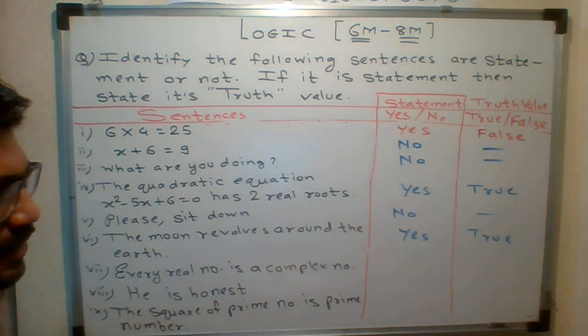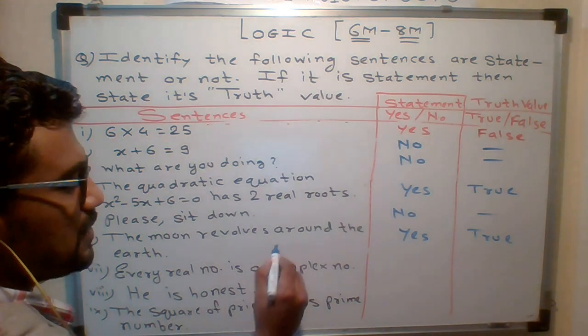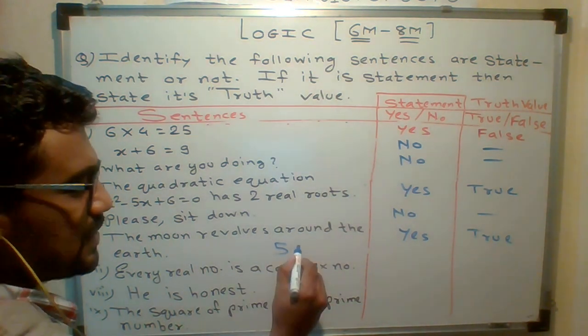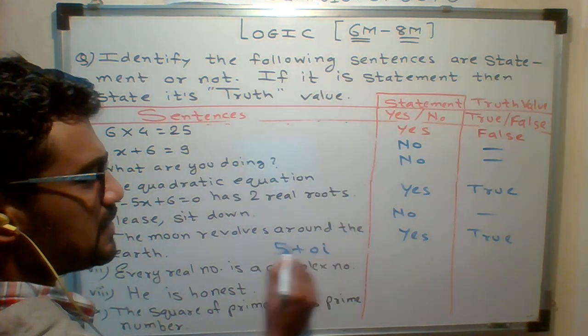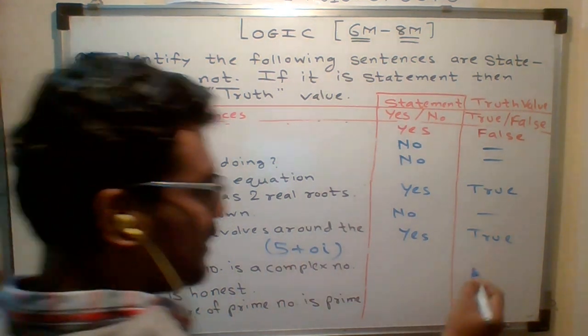Every real number is a complex number. You need to know the complex number. Real number is 5. So is 5 a complex number? Yes, 5 can be written as 5 plus 0i. So 5 plus 0i is a complex number. Yes, it is true.